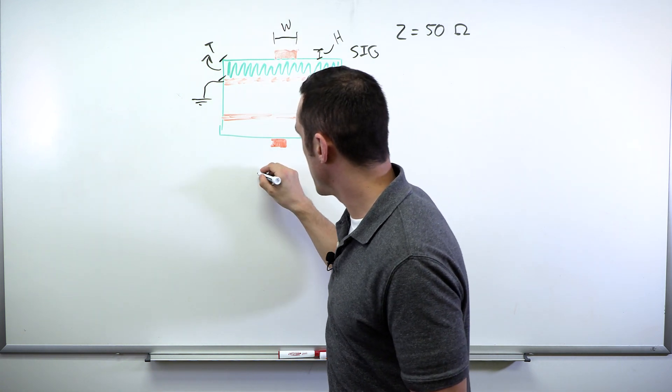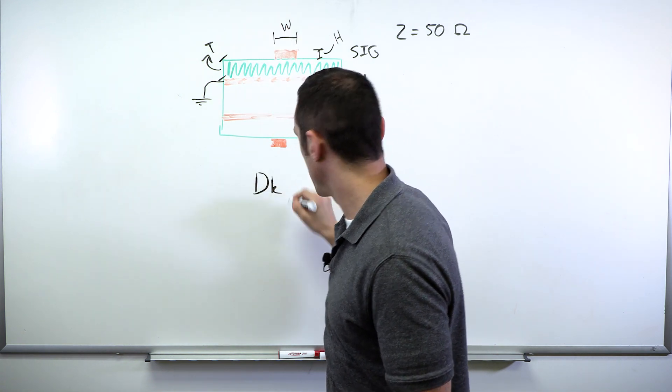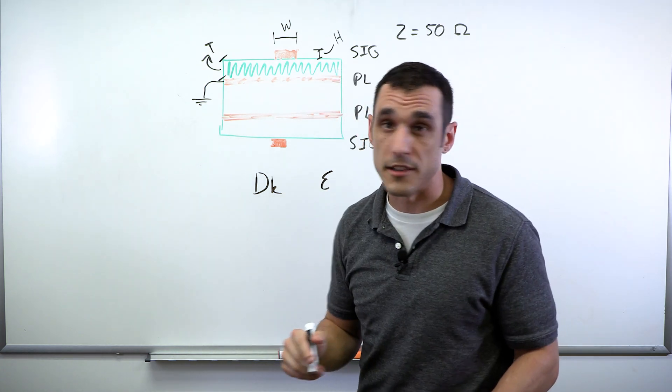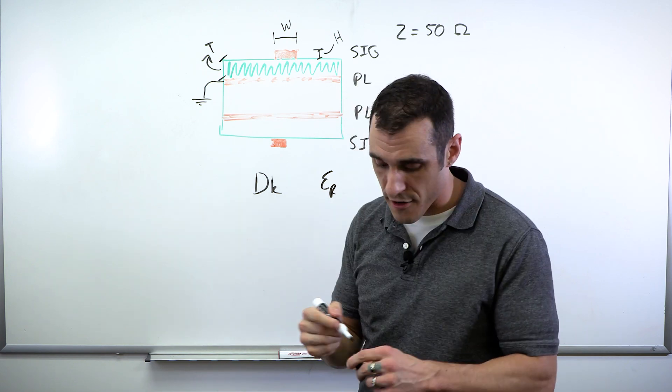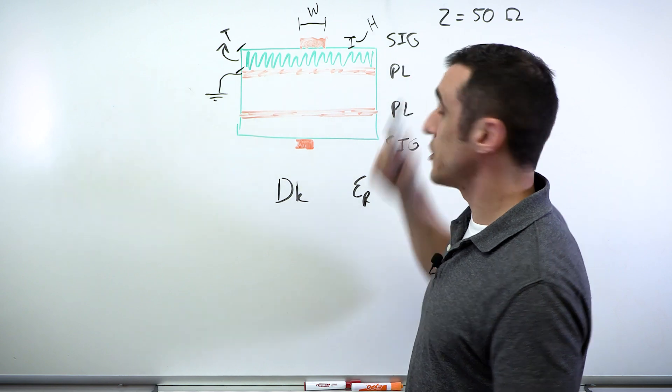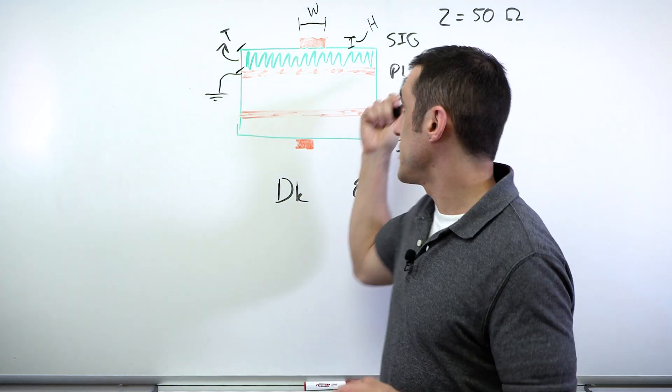And then we have one final parameter. And our final parameter is our dk value. Or if you're like me and you're a physicist, you probably prefer epsilon sub r. So this value, your dielectric constant also goes into determining the trace impedance.